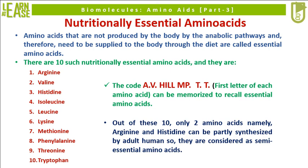Out of these 10, only 2 amino acids — arginine and histidine — can be partly synthesized by adult humans, so they are considered semi-essential amino acids.